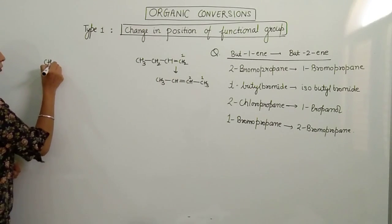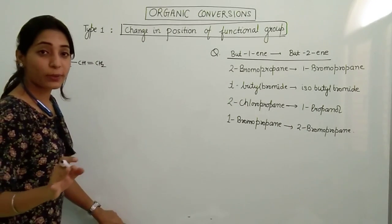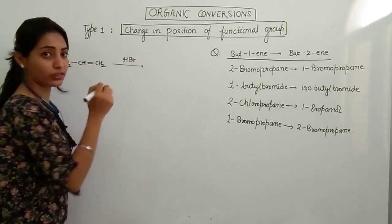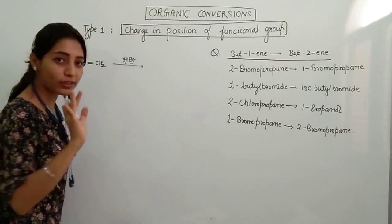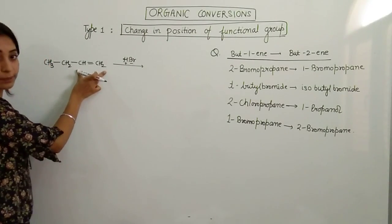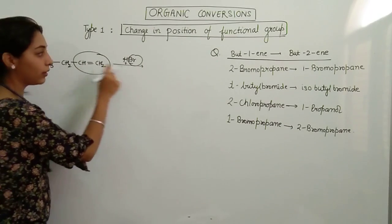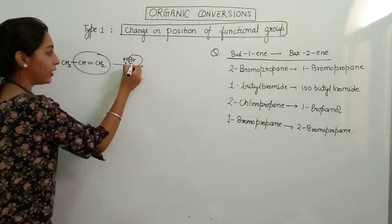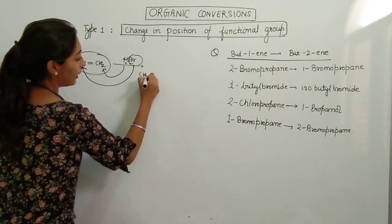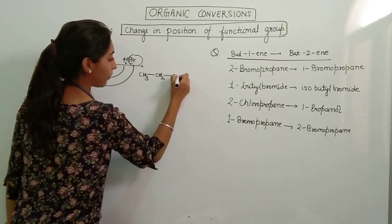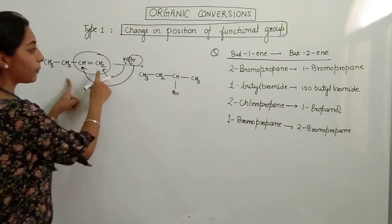Now in every question of this type what you have to do: simply do HBr addition. This is Markovnikov's addition when an unsymmetrical reagent. So whenever you are adding HBr to any alkene, you have to remember the negative part goes to that carbon which has less hydrogen. So this carbon has one hydrogen, this carbon has two hydrogens. So BR goes here and H goes here. The product is CH3-CH2-CHBr-CH3. This is our first step, the addition of HBr.